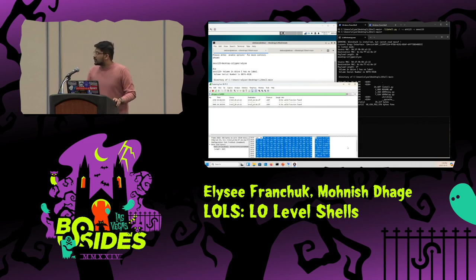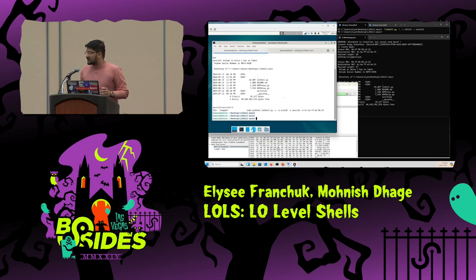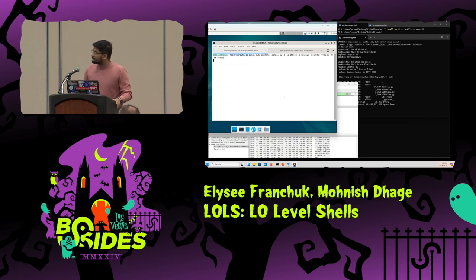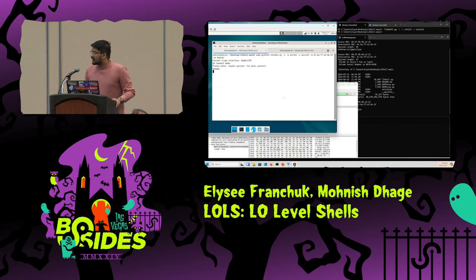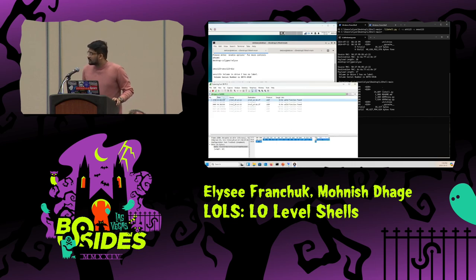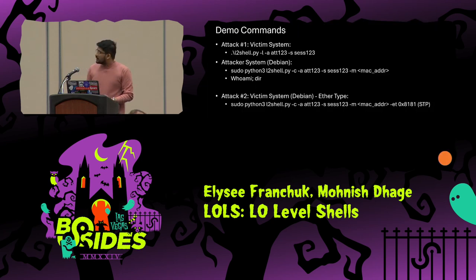Now we'll take a look at the Ether type that we spoke about. The only difference between the two commands is we are specifying the Ether type this time around to see what sort of communication happens. We are using it to blend in. We'll run the same commands — 'whoami' and 'dir.' Let's take a look at the Wireshark capture. We'll do the filter for 8181. As you can see, the commands were sent using STP this time around.